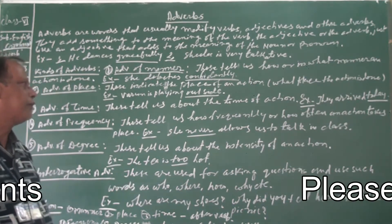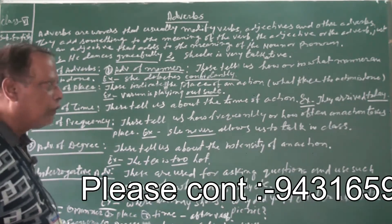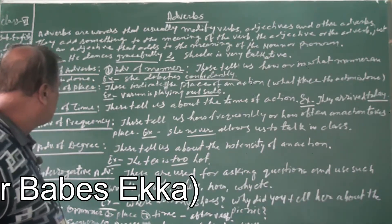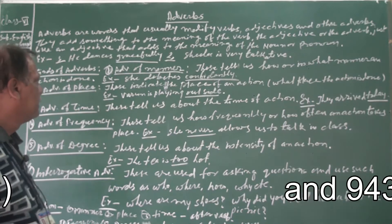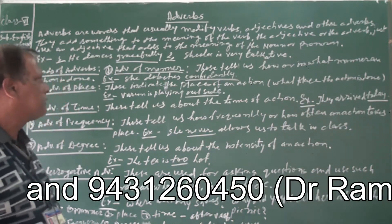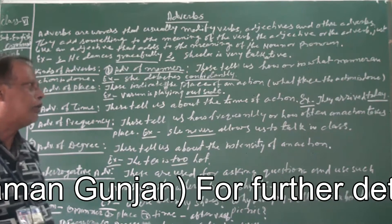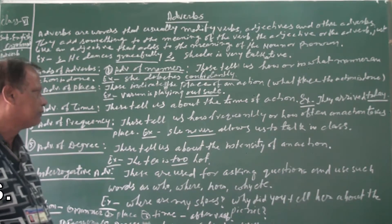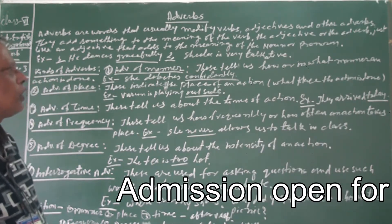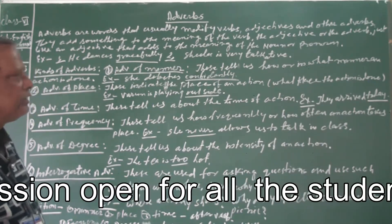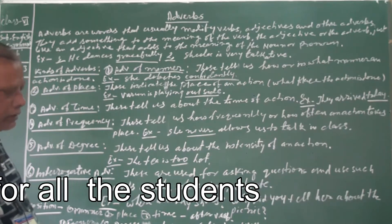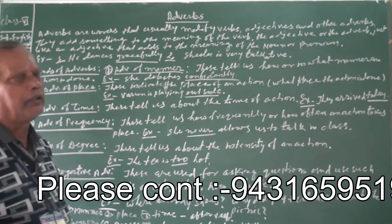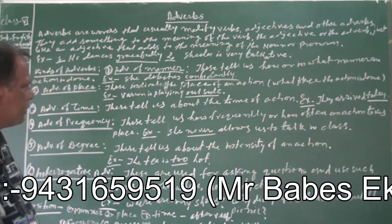Number four: adverb of frequency. These tell us how frequently or how often an action takes place. For example: 'She never allows us to talk in class.' The word 'never' indicates the frequency of the action.